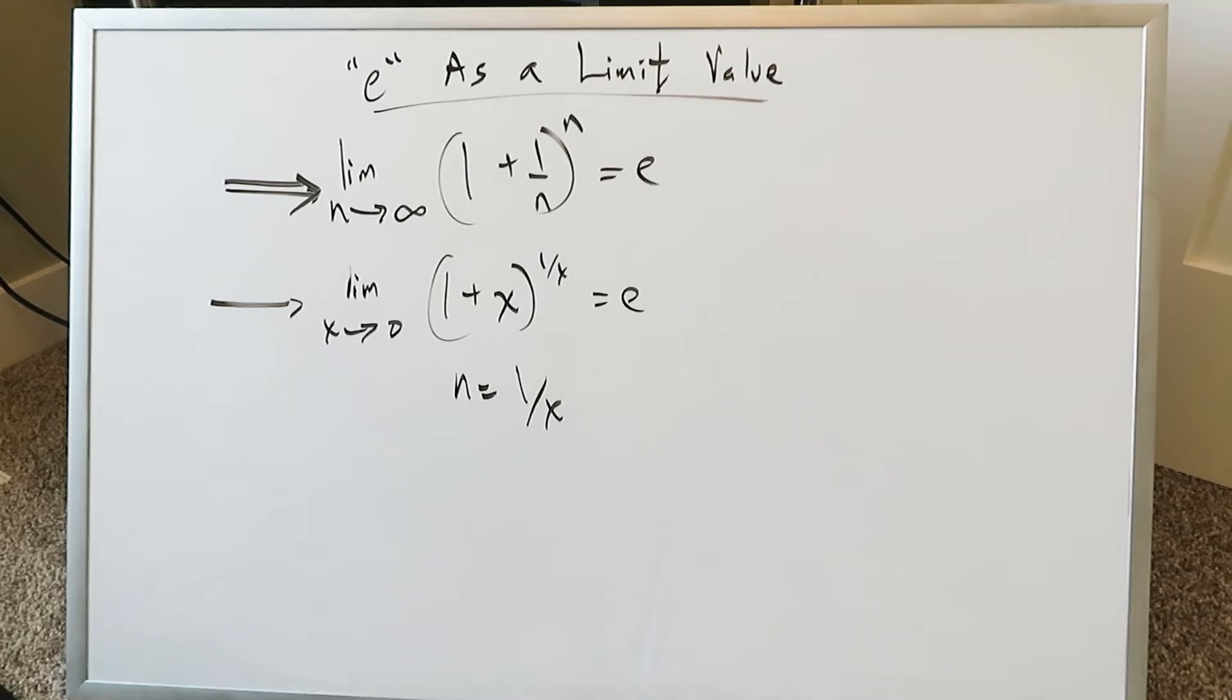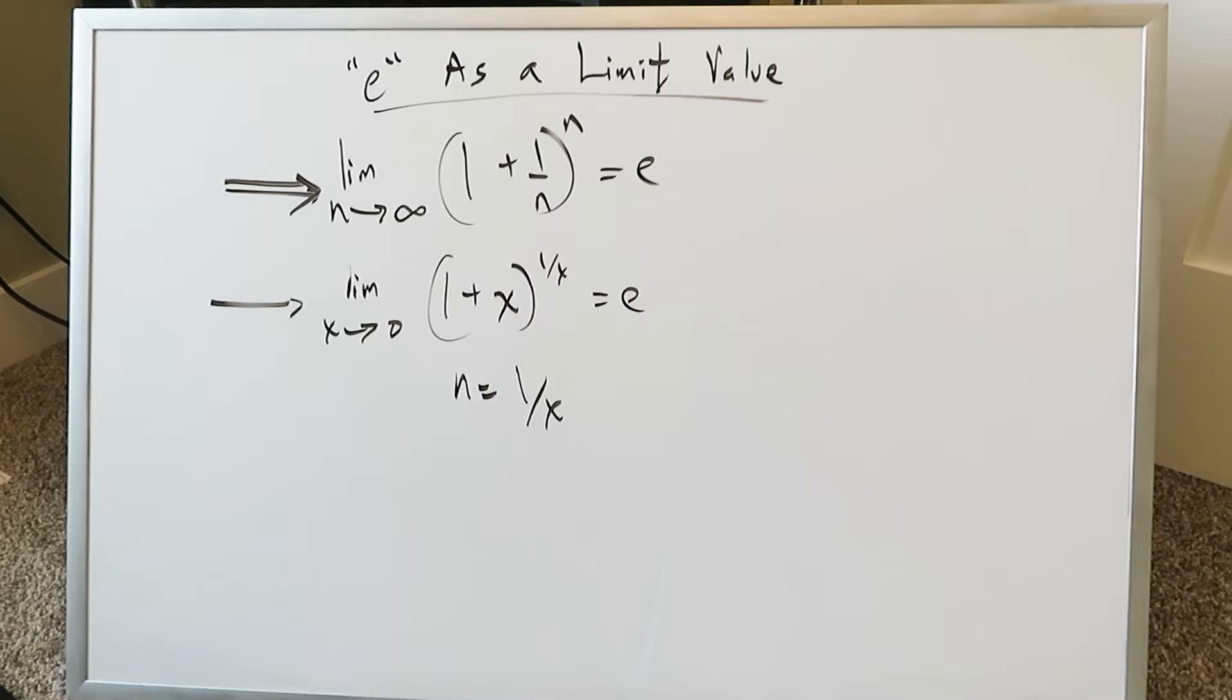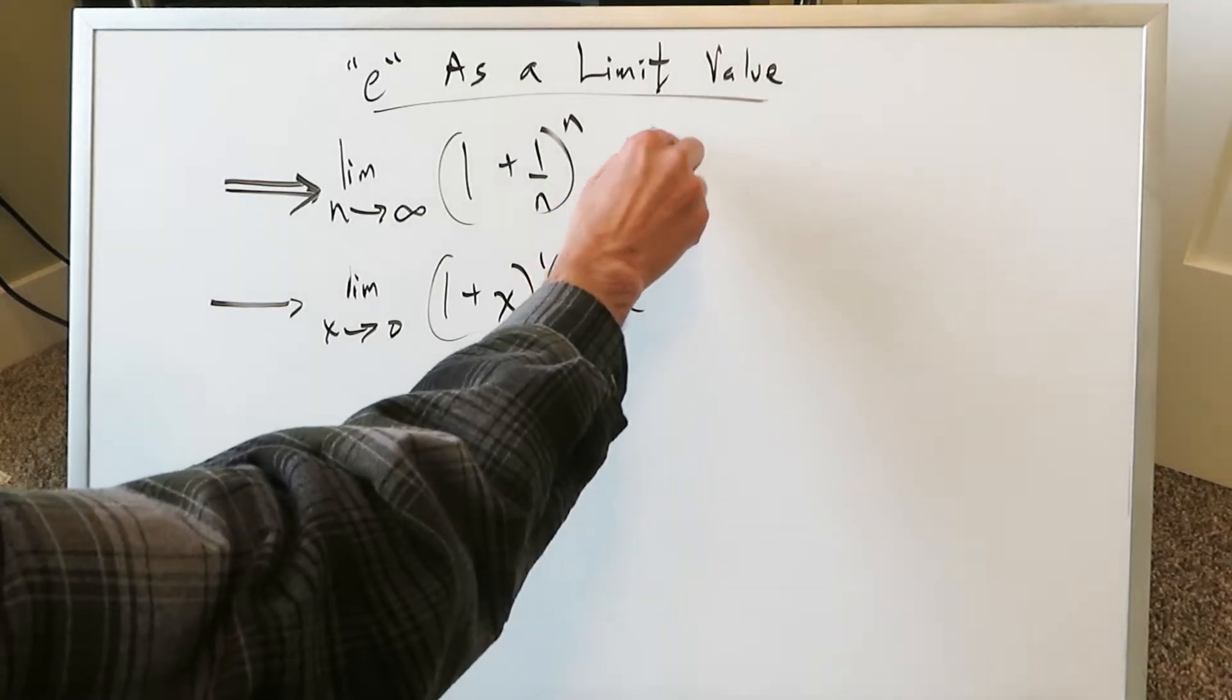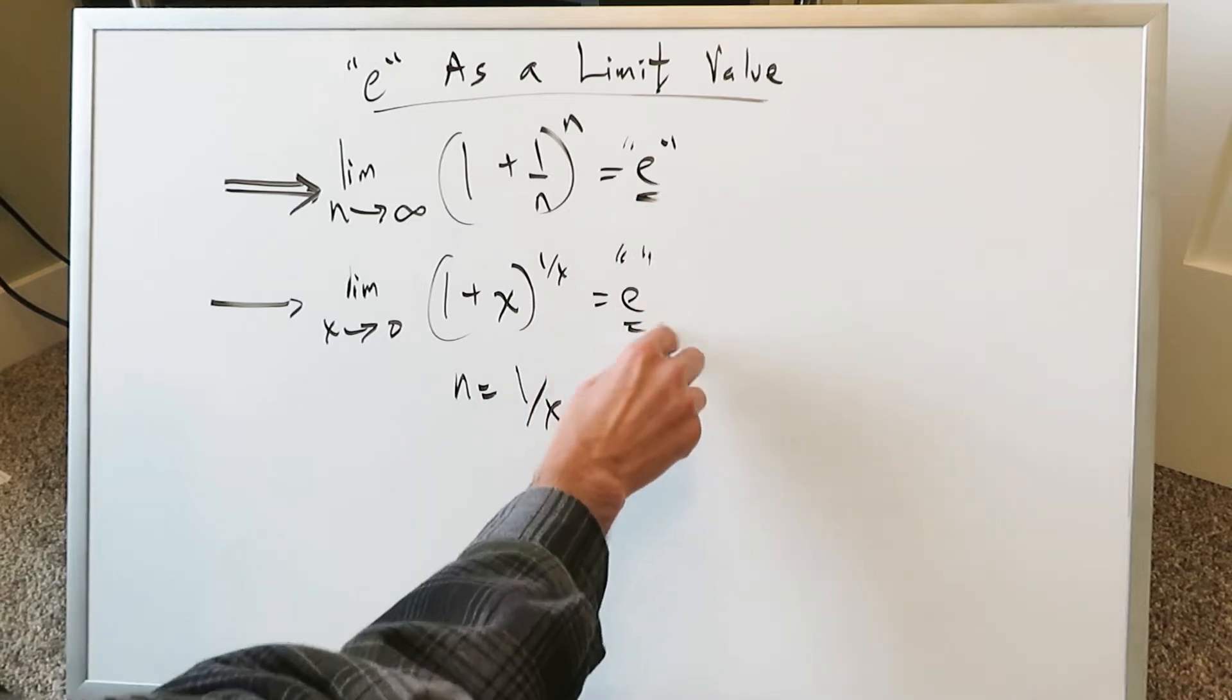E as a limit value. There are two good functions out there and they're placed here before you. If you were to evaluate them, in each instance you would have this output of your limit to be E. The value E here serves very well as an output.